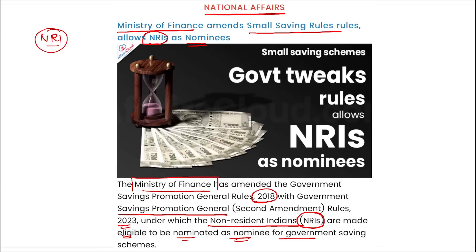This amendment benefits NRIs by allowing them to invest in small savings schemes and addresses issues related to their nomination. Another amendment allows for converting a joint account into a single account upon the death of an account holder — previously this conversion was not allowed. Changes have also been made to payment norms for amounts up to five lakh rupees without a nominee, though specific documents must be provided within six months.